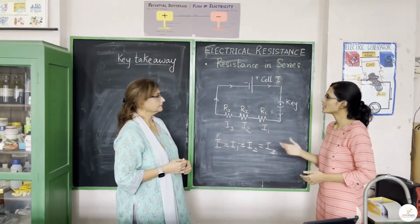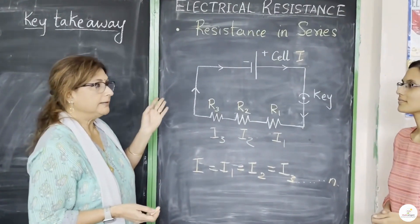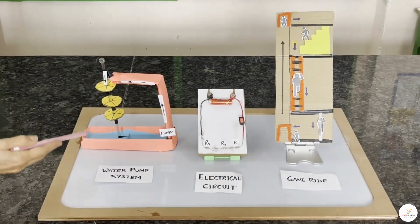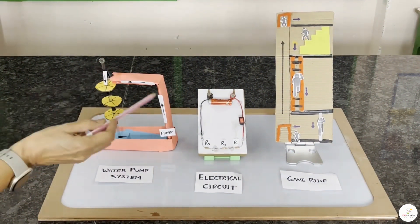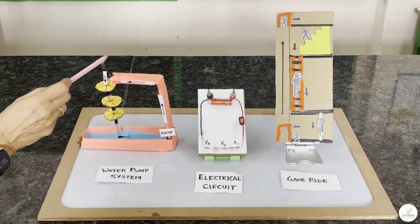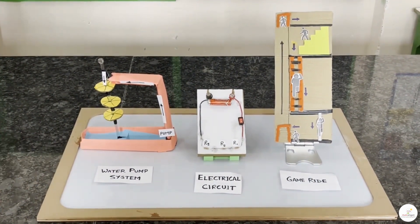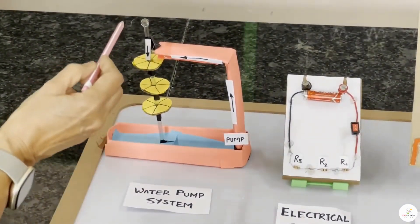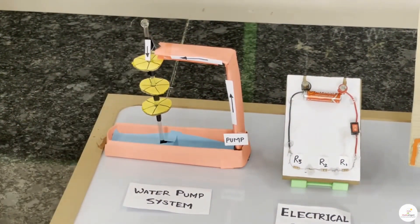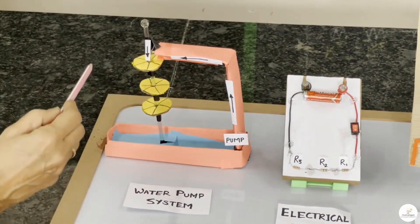When the resistors are connected in series, the amount of current that passes through each resistor will be the same. So, suppose, for example, i is the amount of current coming out of the battery, then i will be equal to i1, i2 and i3. In other words, we can also write i equals i1 equals i2 equals i3. And this is true for any number of resistors. Okay, I get it. But I have a question. What about the voltage? That's a very good question. As you know, the voltage is provided by the cell. Okay, let's go back to our models. First, to the water pump system.